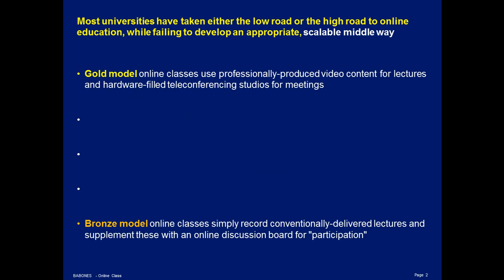Most universities going online have either taken a very low road or a very high road, while failing to develop an appropriate scalable middle way. At the top of the market is the gold model of online classes that are professionally produced by professional videographers, and in which discussion is facilitated via hardware-filled video conferencing facilities — it's unimaginable that this could be scaled out to every class at an institution. But at the other end of the spectrum are bronze model online classes, where lectures are simply recorded as delivered in the lecture hall and stuck up on a website or on a learning management system.